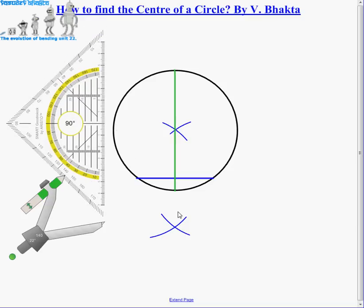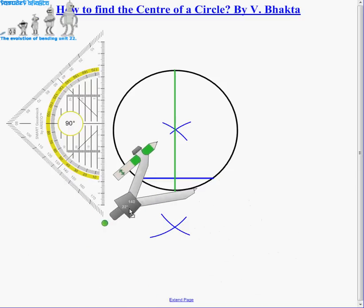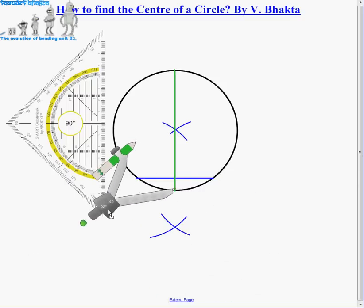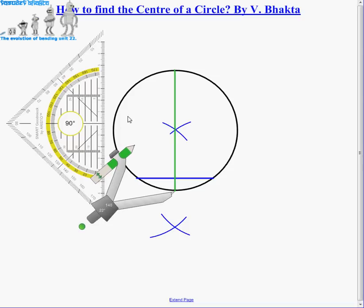Now what we do here is what we've done for the chord - we take our compass again and do exactly the same thing, but this time apply the same principle to the diameter that we've worked out. This will allow us to bisect the diameter of the circle in half, and in doing so we will find the point where the center of the circle lies.